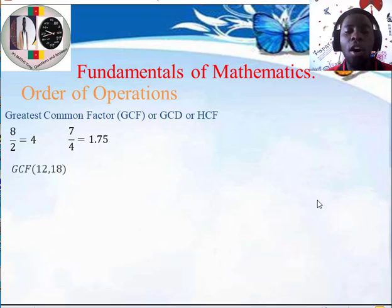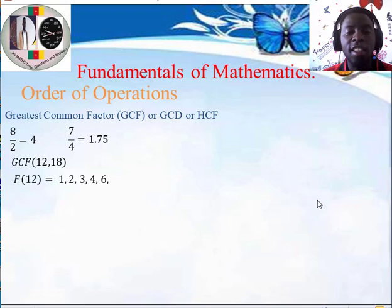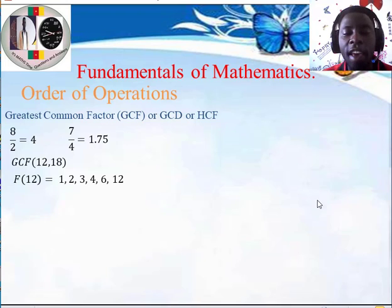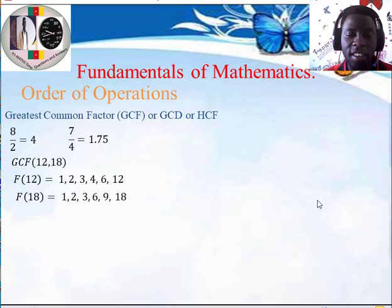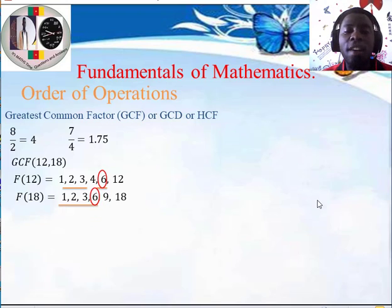Let's look for the greatest common factor of 12 and 18. We list the factors of 12: 1, 2, 3, 4, 6, and 12. All of these numbers divide 12 with a remainder of 0. Then we list the factors of 18: 1, 2, 3, 6, 9, and 18. We can notice that 1, 2, 3, and 6 are common factors. But 1, 2, and 3 are not the biggest — the biggest common factor is 6. Therefore, the greatest common factor between 12 and 18 is 6.